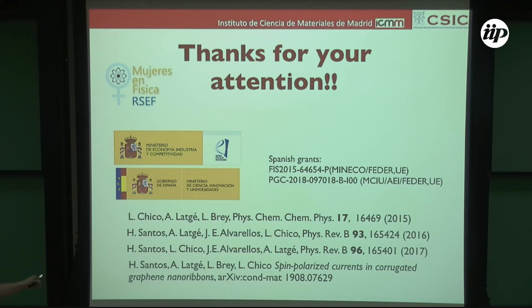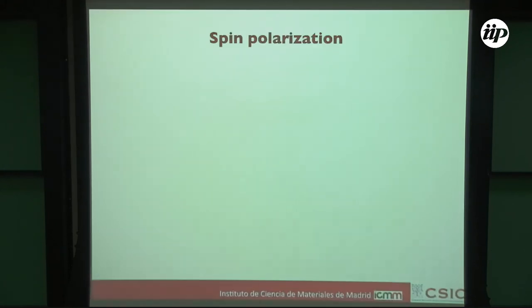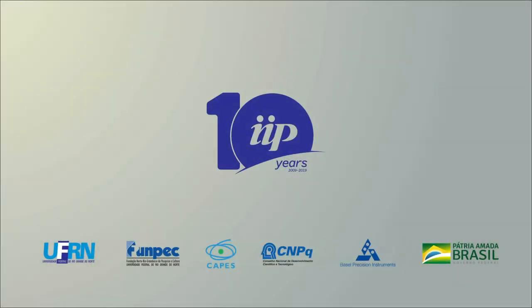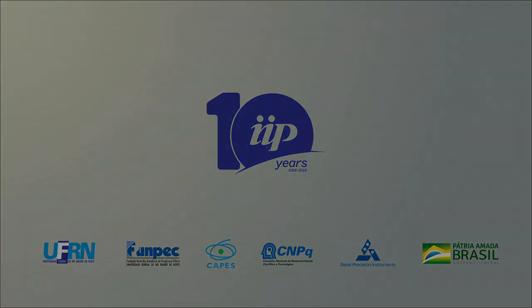Thank you for your attention. Post-talk question: 'For the spin polarization, what fixes the direction of the polarization? The leads are unpolarized, so you could choose whatever direction.' Answer: That would be a third step — the measurement procedure. You have to measure the spin in a chosen direction.